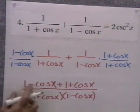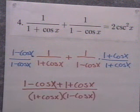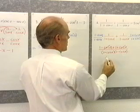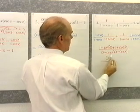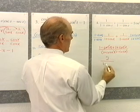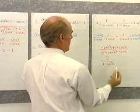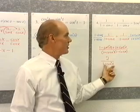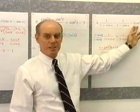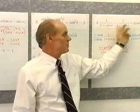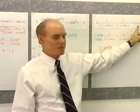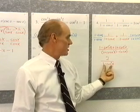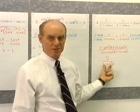In the numerator I have (1 minus cosine x) plus (1 plus cosine x). The minus cosine x and plus cosine x add to 0, and 1 plus 1 is 2. In the denominator, I have (1 plus cosine x)(1 minus cosine x), which equals 1 minus cosine squared x. Now I look back to the original identity — 2 cosecant squared x. In the denominator I have 1 minus cosine squared, and 1 minus cosine squared is sine squared. So 1 over sine squared is cosecant squared.